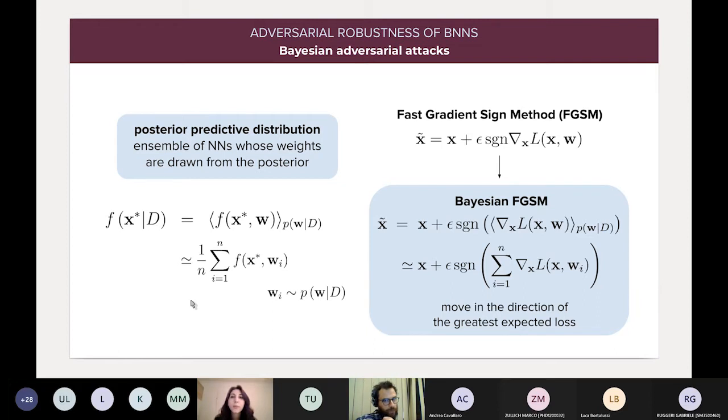So, for example, suppose that we want to define the Bayesian version of the FGSM attack, which was presented in the last talk. What we do is we attack the posterior predictive distribution by moving in the direction of the gradient of the expected loss. So, we do exactly what we would do in the deterministic case, but on an ensemble of posterior samples.